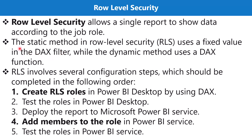In this video we are going to explore the static method. The static method uses a fixed value in the DAX filter, while the dynamic method uses a DAX function. In the dynamic method, instead of a filter we use a couple of DAX functions to configure row level security dynamically. The full configuration across Power BI Desktop and Power BI Service involves five steps total — we'll first look at the two steps done in the desktop: creating the roles using DAX, and then testing those roles.